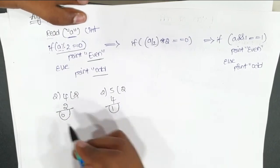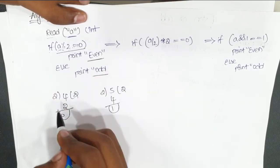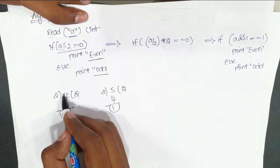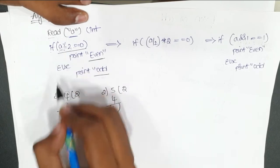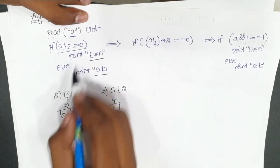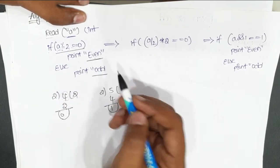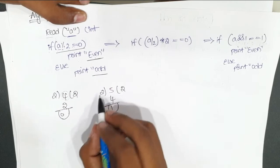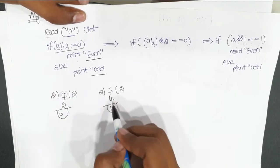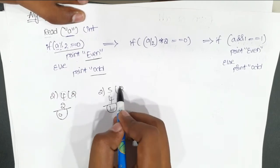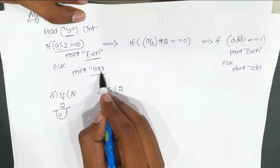Let me explain the dry run. Initially I give 'a' the value 4. Then a mod 2 gives a remainder of 0, so it will print 'even number'. If I take 5, then 5 mod 2 is not equal to 0, so it goes to the else part and prints 'odd number'.